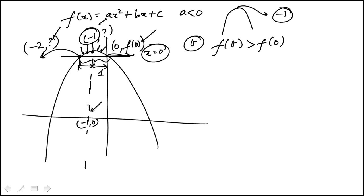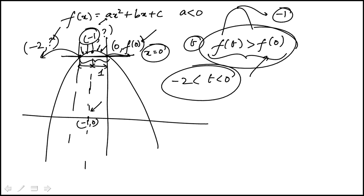Which means that t, for this condition to hold true, as long as t is between those two values, between minus 2 and 0, this condition would be satisfied. So that is indeed true. And if you look at the answer choices, the options, I should say, the Roman numeral, that's the first one.